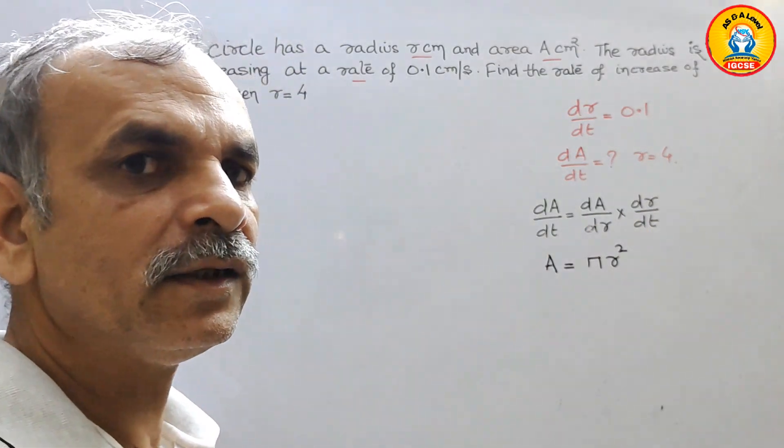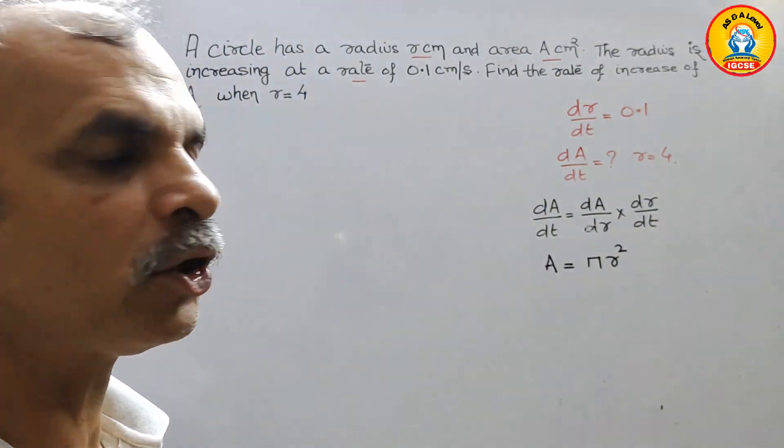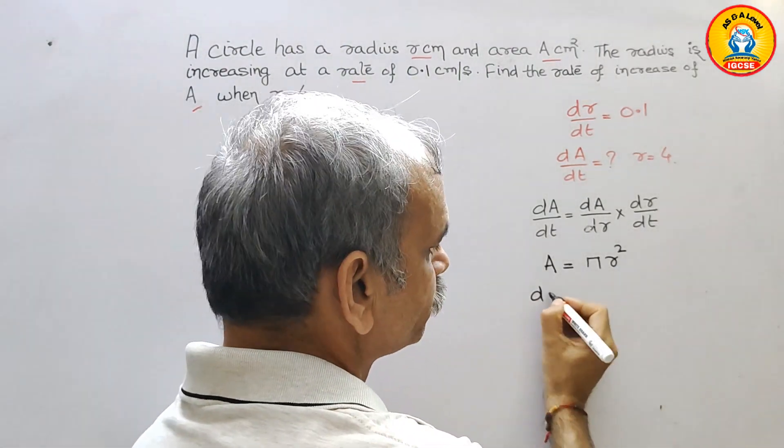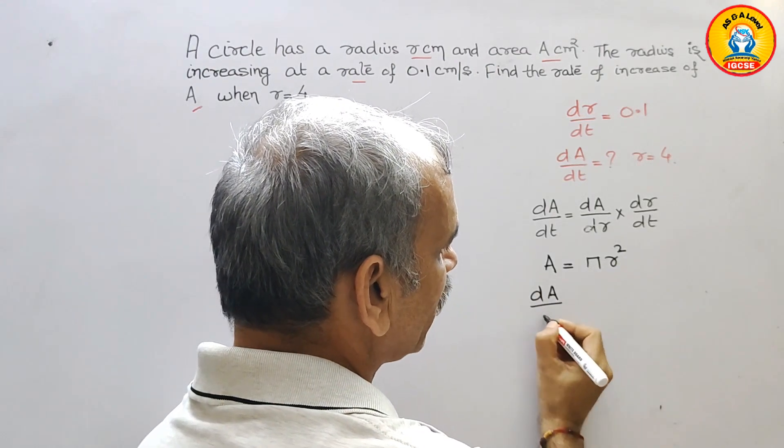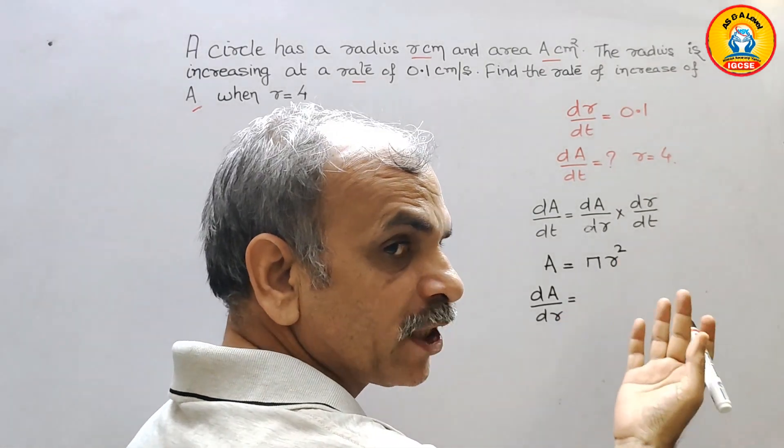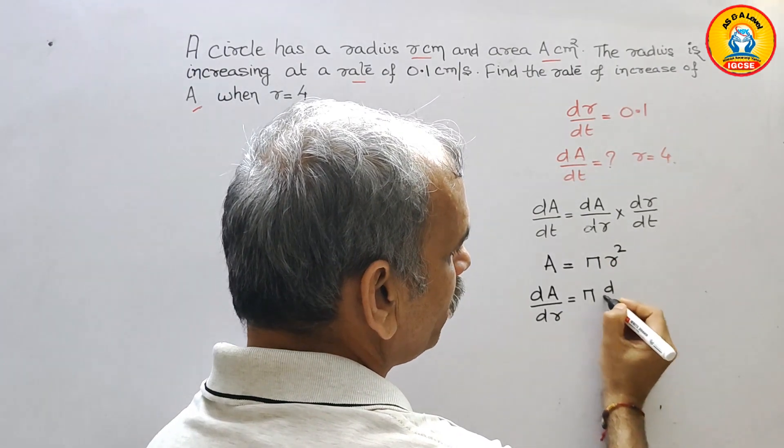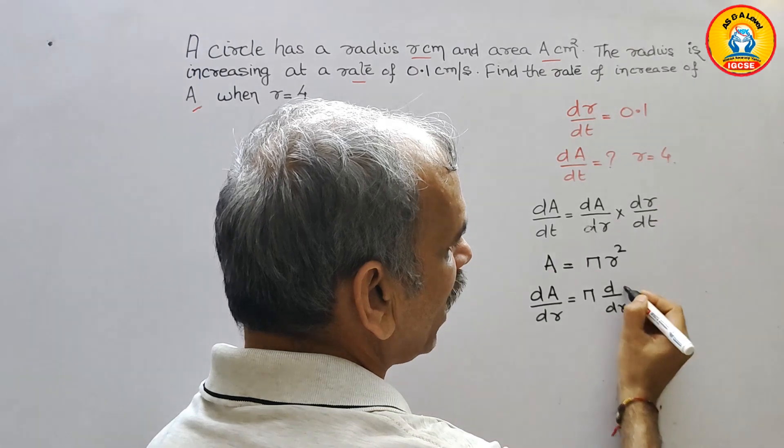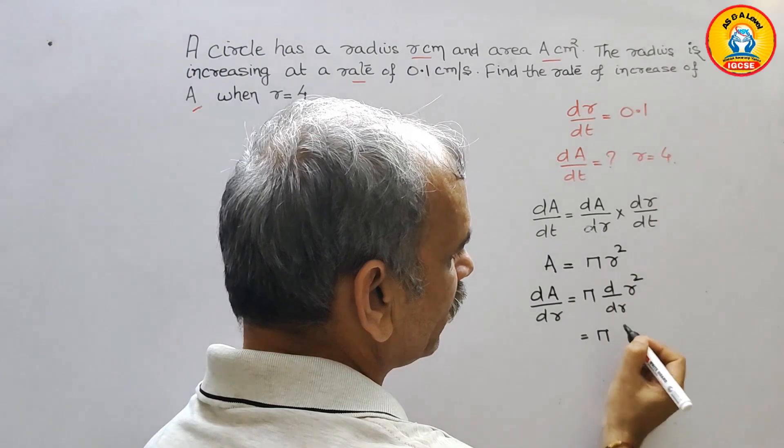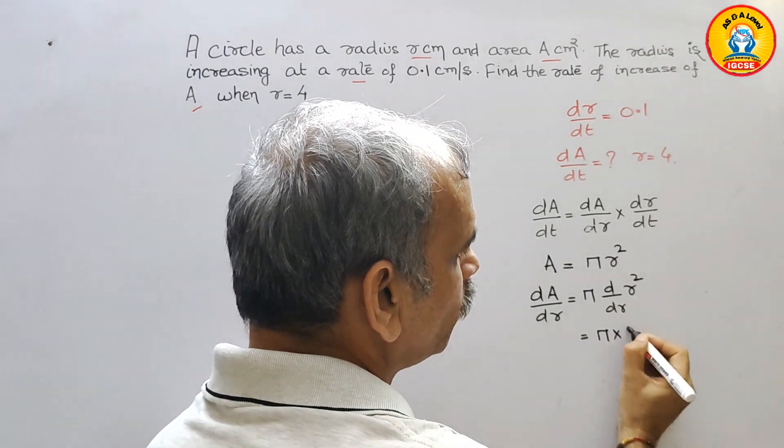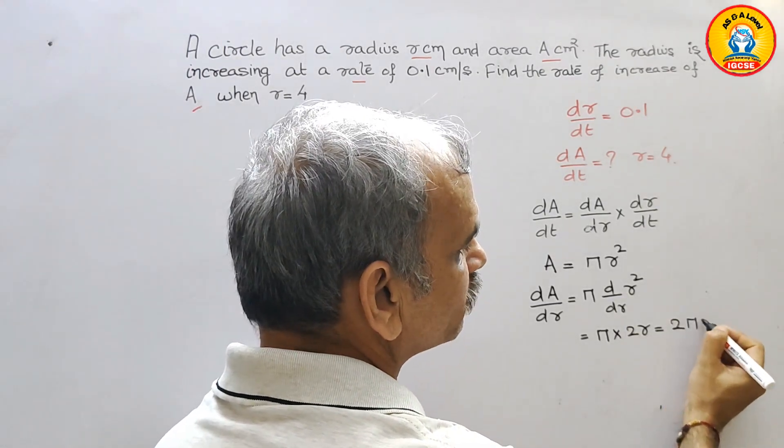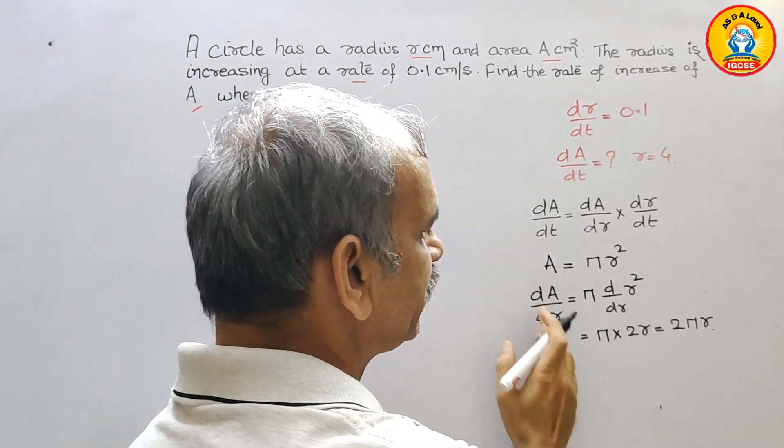If you differentiate, what you will get? We will get dA by dr. dA by dr is equal to pi is a constant, pi d by dr of r square. So here you will get pi into 2r. That is equal to 2 pi r is dA by dr.